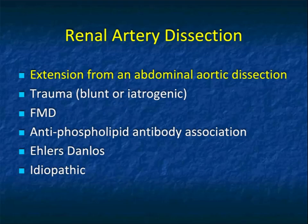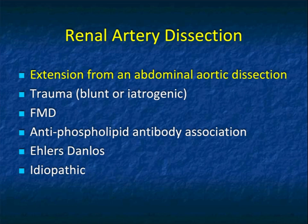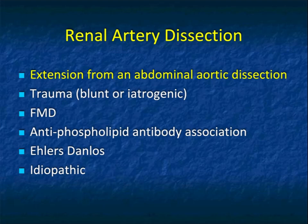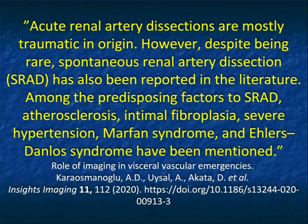Most cases of renal artery dissection are extension from an abdominal aortic aneurysm dissection. When we look at abdominal aortic dissections, we look at involvement of the celiac, SMA, or renal arteries. You can also see dissection from trauma. FMD is one of the causes of dissection. Antiphospholipid antibody associated syndromes can also be a cause. In Ehlers-Danlos patients, aneurysms and dissections are not uncommon, and of course, idiopathic.